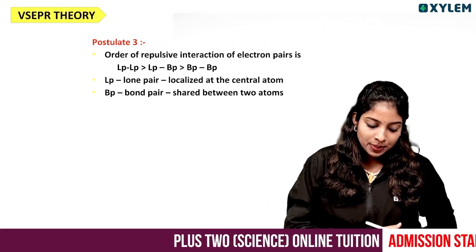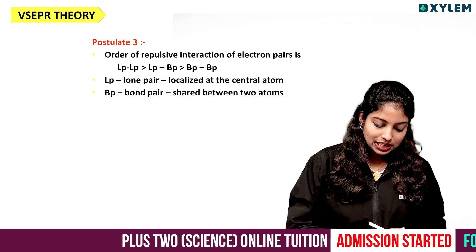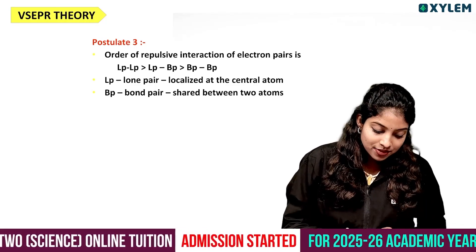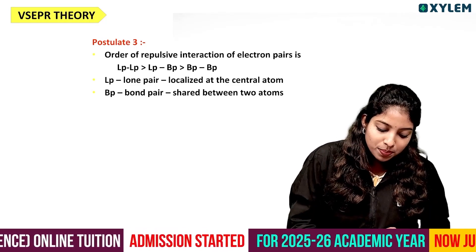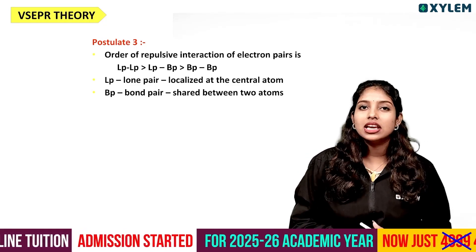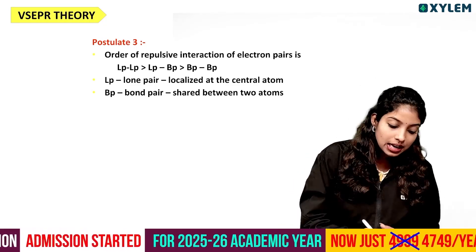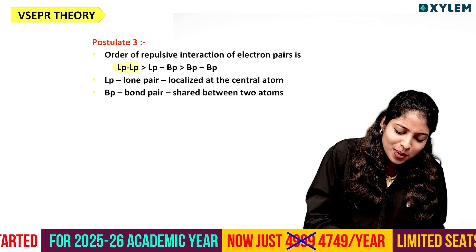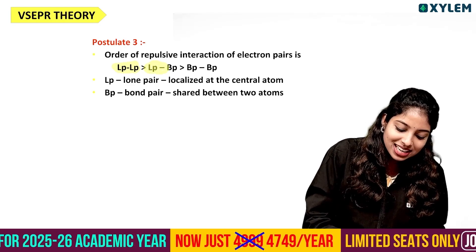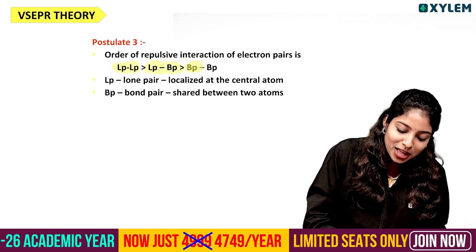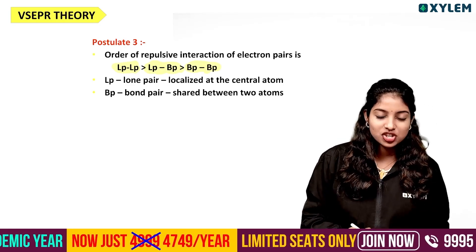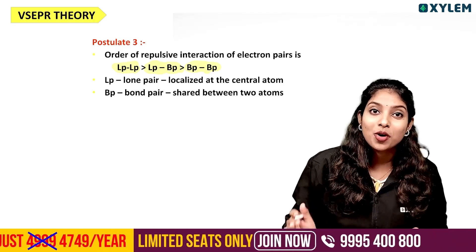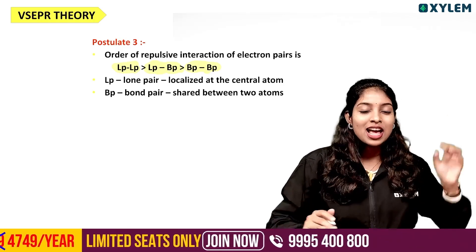Another postulate: the order of repulsive interactions is lone pair–lone pair repulsion, which is greater than lone pair–bond pair repulsion, which is greater than bond pair–bond pair repulsion.